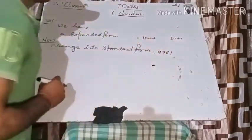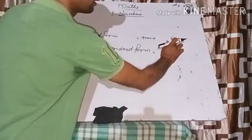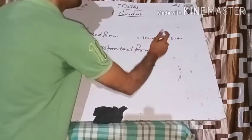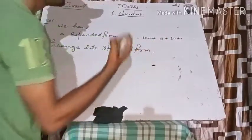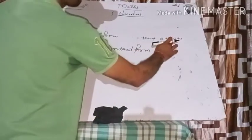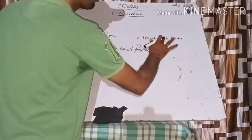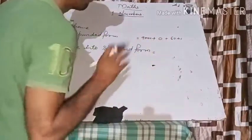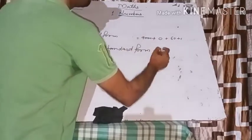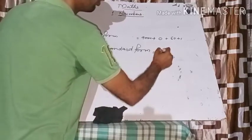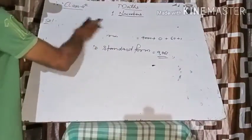Now suppose there is a missing place — for example, no hundreds digit. In that case, you write zero in the hundreds place. So if we have 9000 + 60 + 1 with no hundreds, we write 9061. The zero fills the gap where no digit is present.